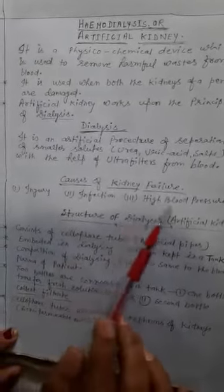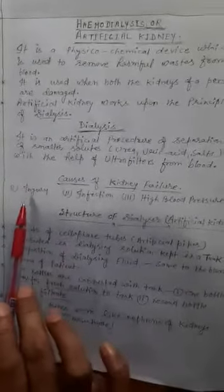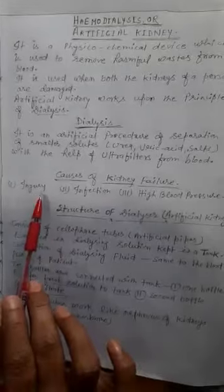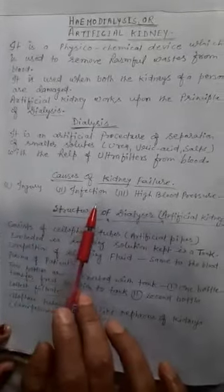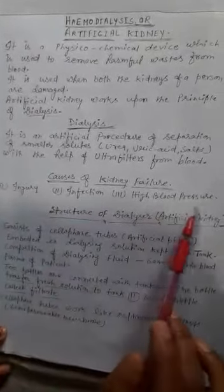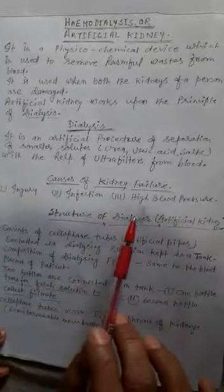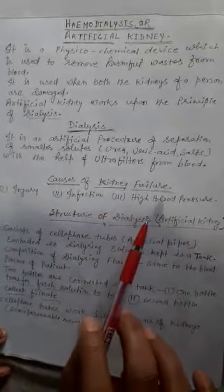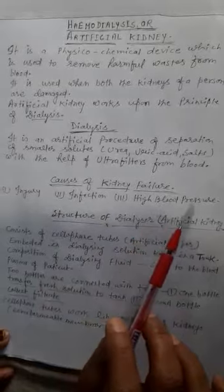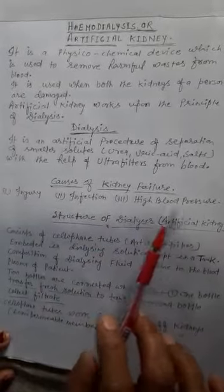There are various causes of damage of kidney. First is injury, second is infection, third is high blood pressure. These three causes damage the nephrons.